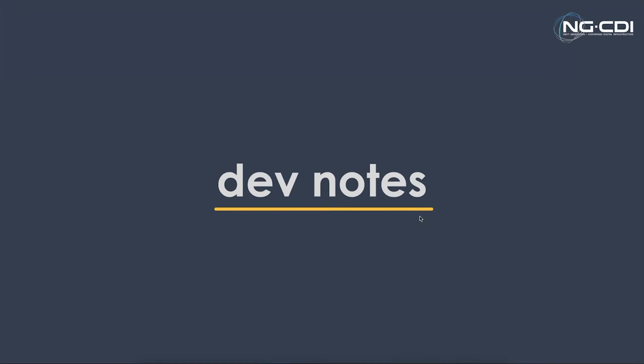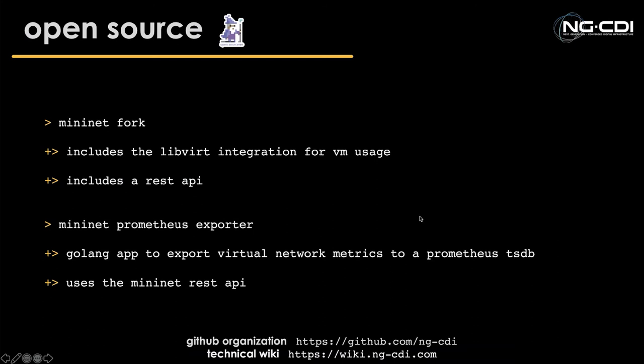Just before we move on to the proof of concept, I want to make a few notes useful to those doing developer work on NGCDI. The work related to this specific project is open source. If anyone has use for a Mininet fork that allows for LibVirt-based nodes and provides a REST API, that's now available. And there's a limited amount of technical support available too. There's also a Prometheus exporter for Mininet, which is also open source.